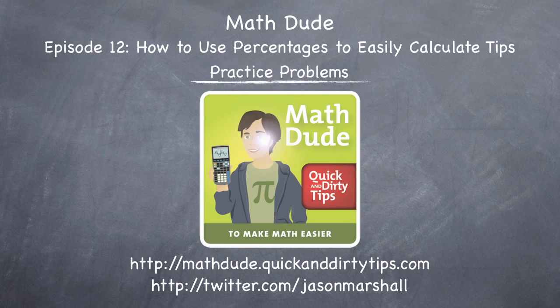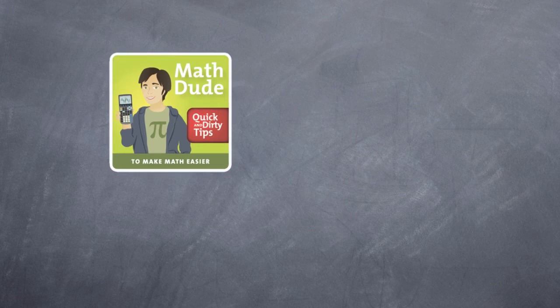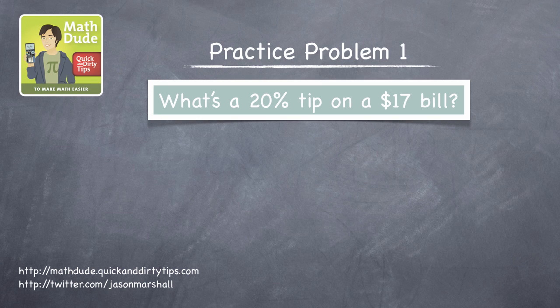Hey math fans, Jason Marshall here with solutions to the practice problems from the end of Math Dude episode 12. The first practice problem is to figure out what is a 20% tip on a $17 bill.